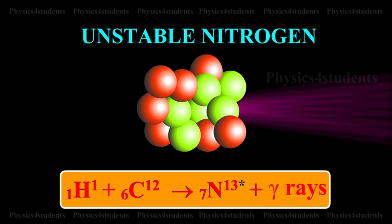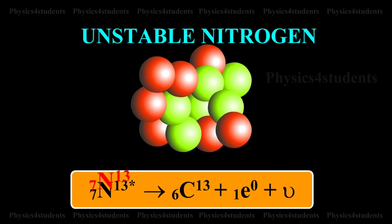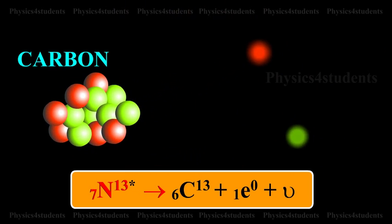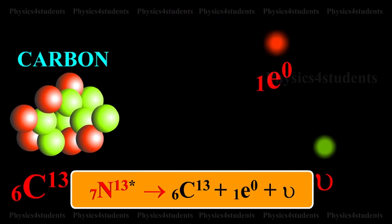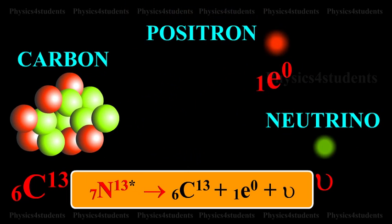This unstable nitrogen disintegrates into Carbon, i.e. 6C13, a positron and neutrino.